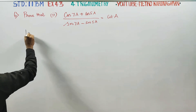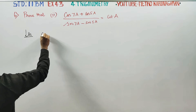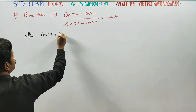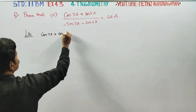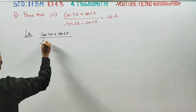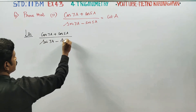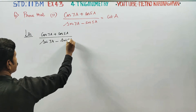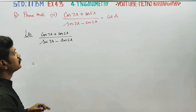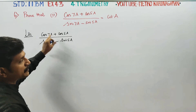My LHS is cos 7A plus cos 5A by sin 7A minus sin 5A. The formula is direct.